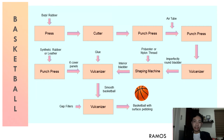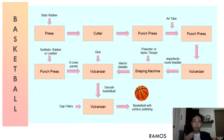The bladder is inflated in the vulcanizer, and if it stays inflated for 24 hours it passes the initial testing stage. However, the bladder is not yet perfectly round, so it is sent into a shaping machine which wraps polyester or nylon thread around the inner bladder. These threads create the spherical shape of the ball and prevent it from being deformed.